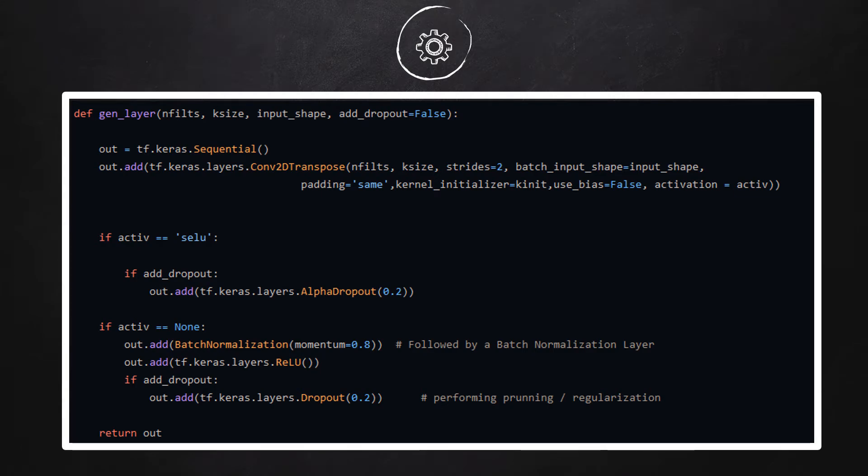The code block for a generator looks like this. We first create a custom layer function which generates a layer block consisting of a set of layers. More specifically, each custom layer block consists of an inverse convolution layer and a batch normalization layer. A dropout layer is also added in order to add regularization and avoid overfitting.